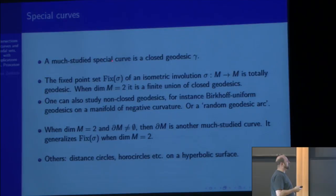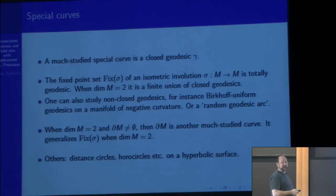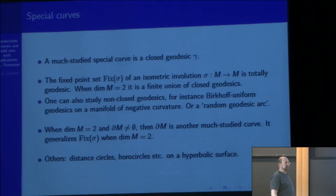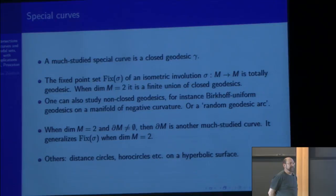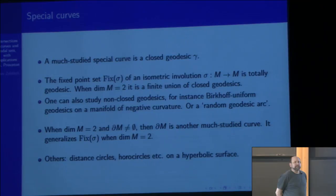Another important curve is the fixed-point set of an isometric involution, which is always totally geodesic. When the dimension is two, it's a finite union of closed geodesics. There's a well-known question of Bourgain and Rudnick about what kind of curves an eigenfunction can completely vanish on. In two dimensions they prove that for a flat torus such a curve would have to be a closed geodesic. Toth and I have been studying the idea of a 'good curve,' where there's a Carlemon-style lower bound.